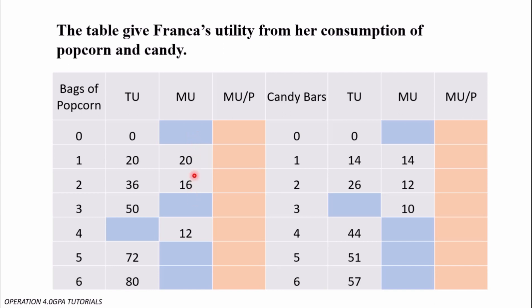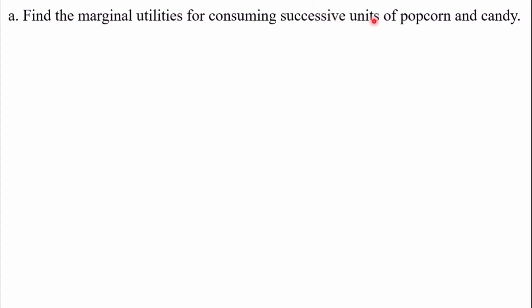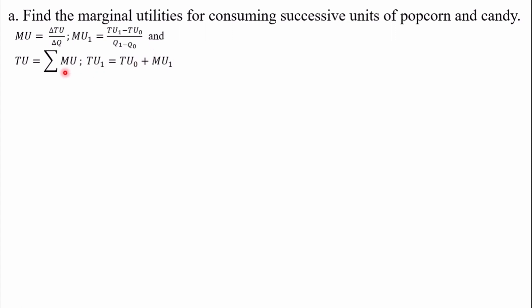Let's go deep into the question. The first part says: find the marginal utilities for consuming successive units of popcorn and candy. The formula for marginal utility is change in total utility over change in quantity. So the MU for the first unit is going to be total utility for that first unit minus total utility of the previous one, over the change in quantity, which is Q1 minus Q0.